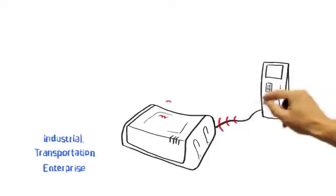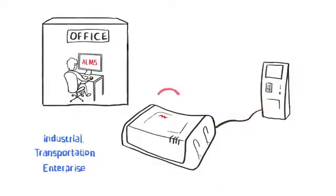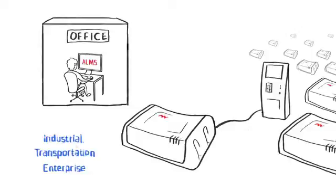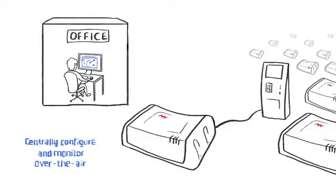Because gateways get deployed in remote locations, AirLink Management Service powered by AirVantage allows you to centrally configure all software parameters and monitor entire deployments over the air.